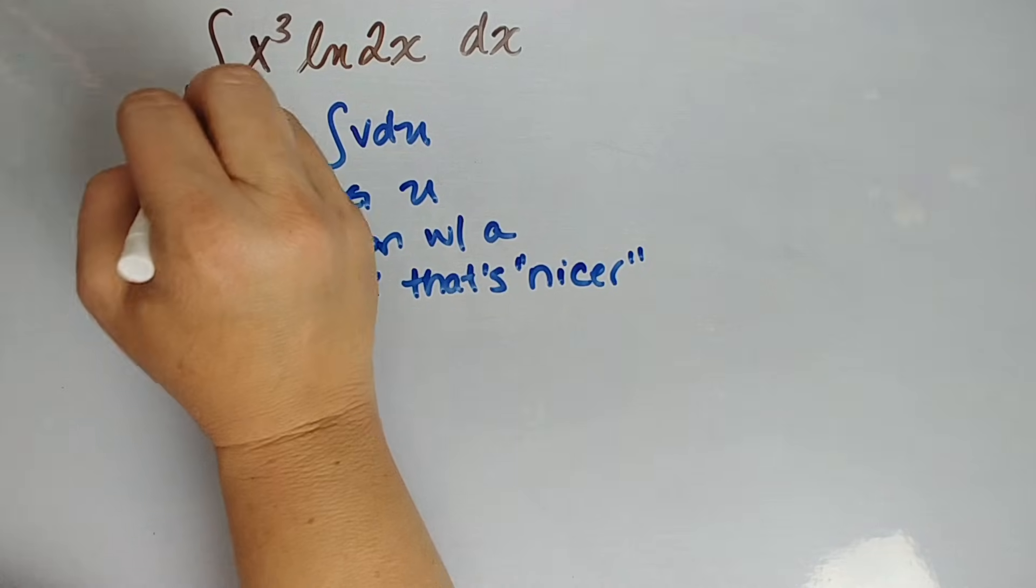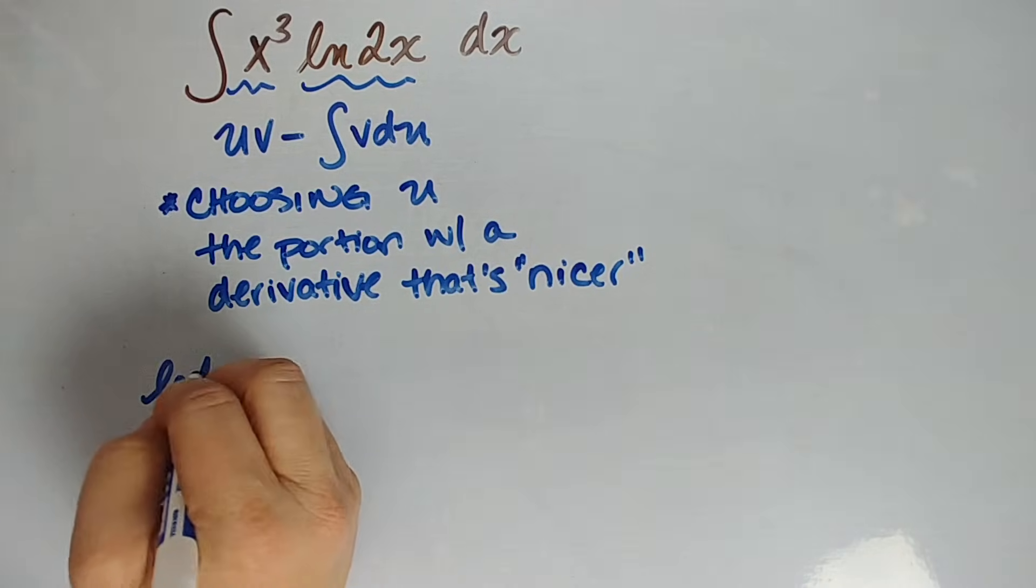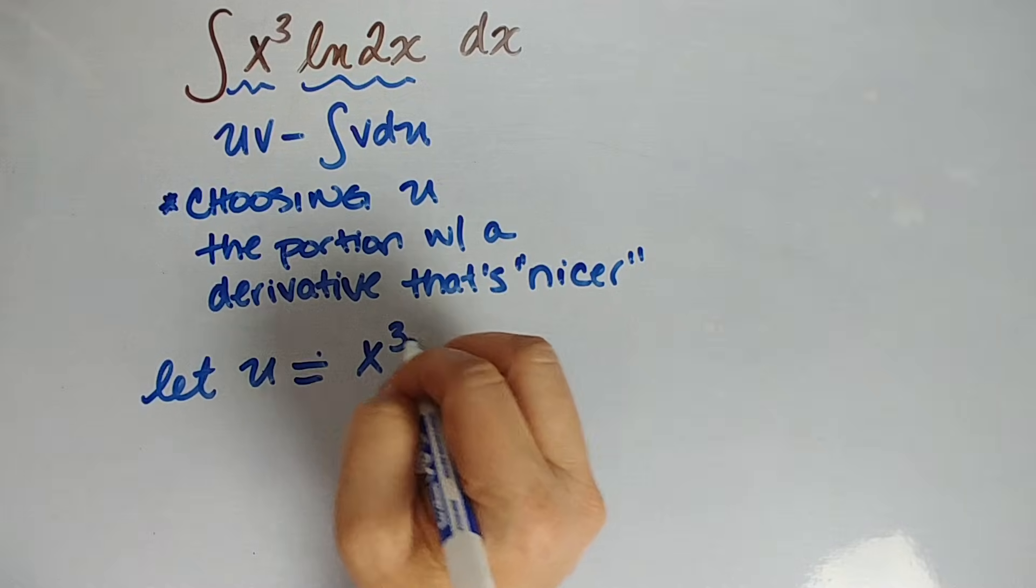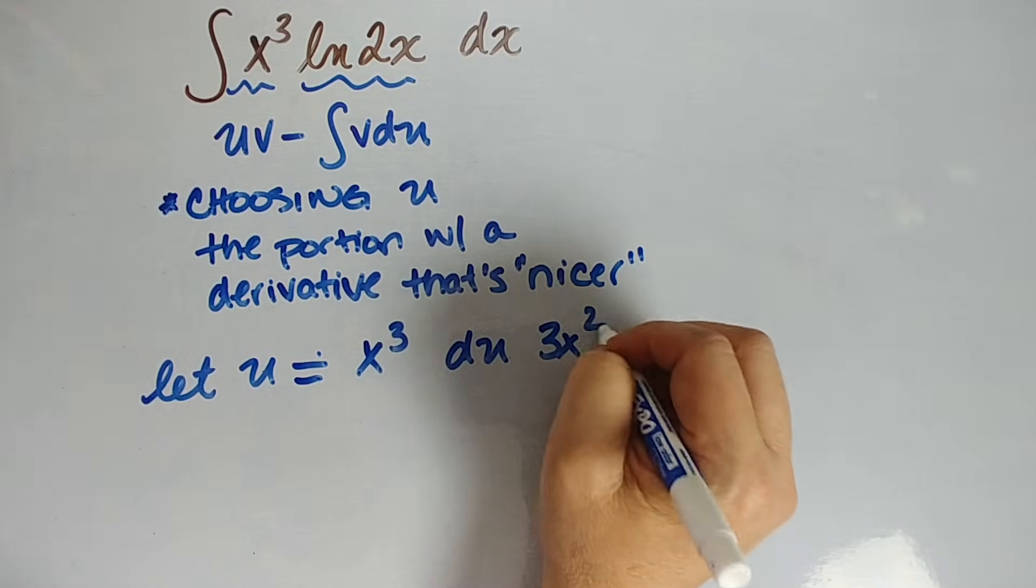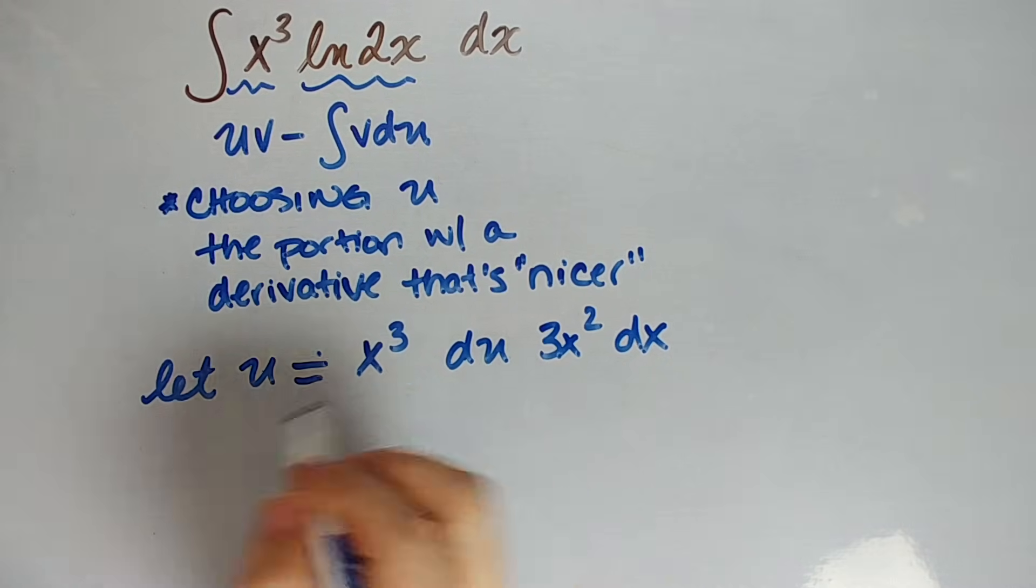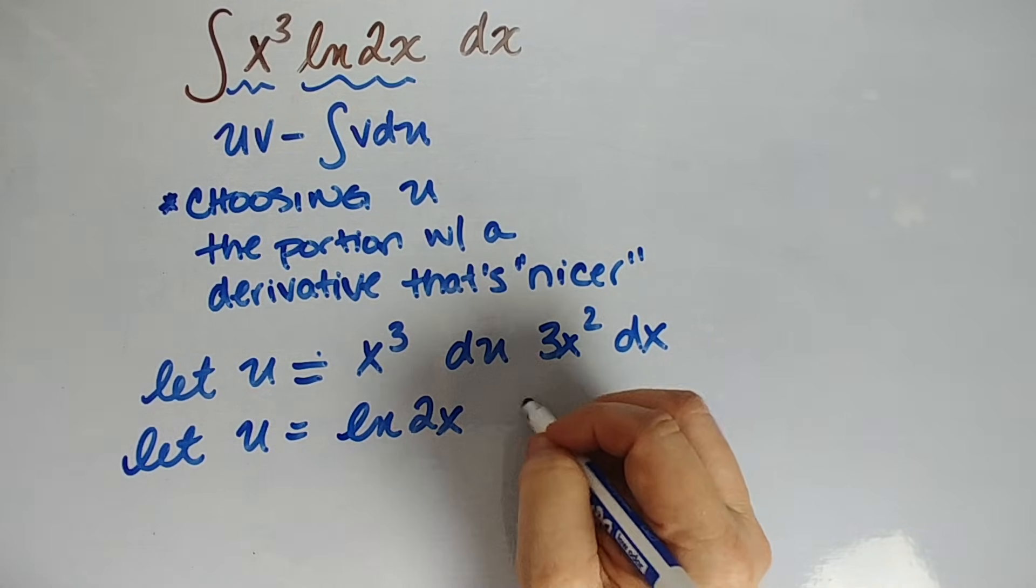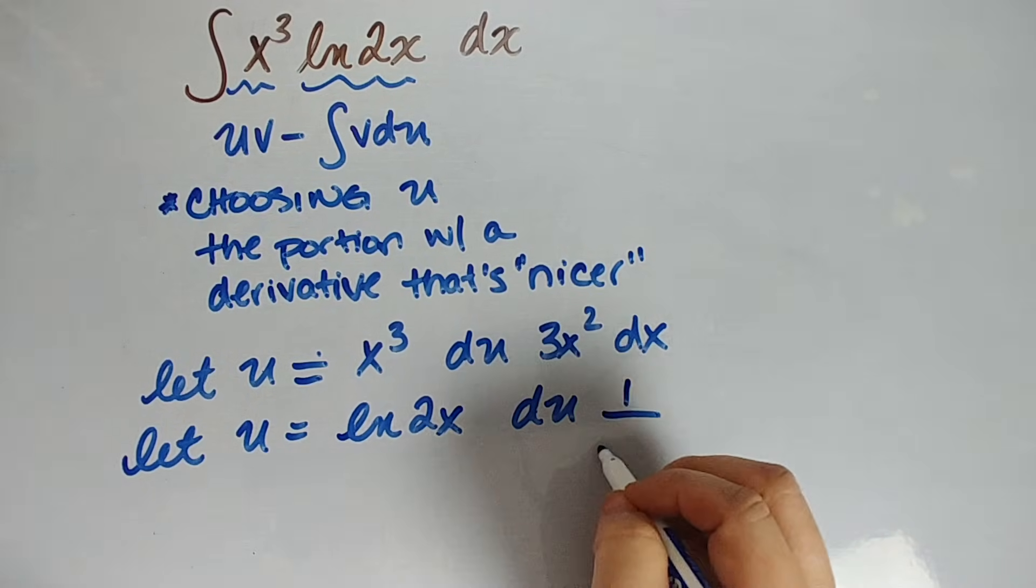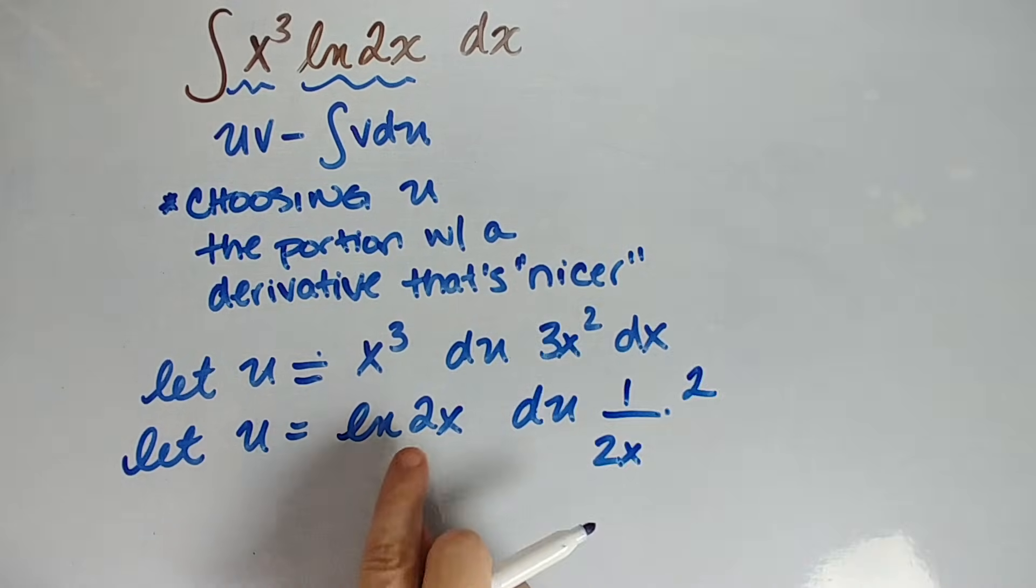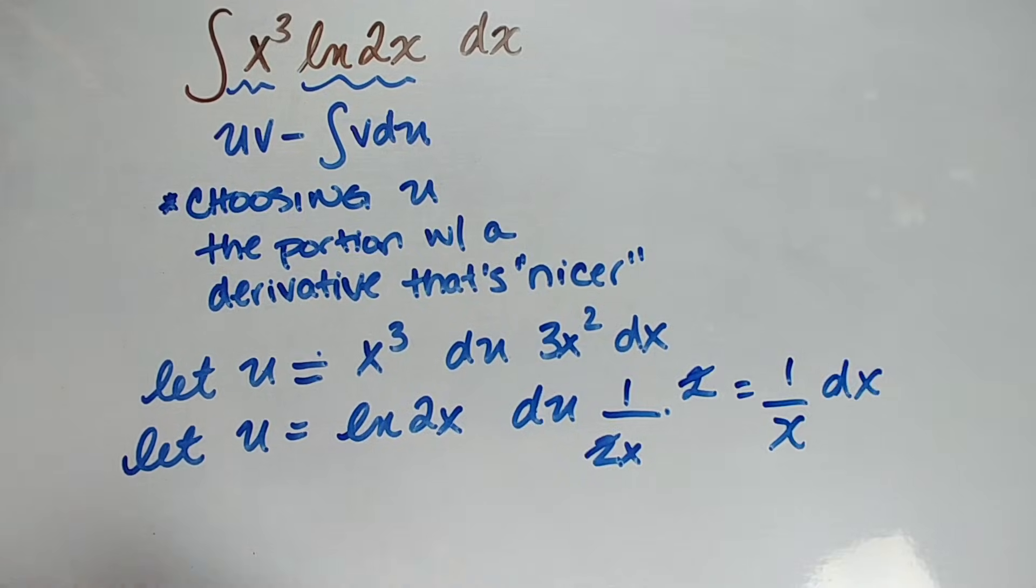So for example, looking at this, we have x cubed and natural log of 2x. Well, if we let u be x cubed, then du is going to be 3x squared dx. 3x squared is not ugly, but it's not any nicer than x cubed. So let's see what happens if we let u instead be the natural log of 2x. Well then du, remember it's going to be a chain rule here. We're going to say 1 over 2x times the derivative of the inside, which is 2. So we just get 1 over x dx. I don't know about you, but 1 over x dx is way nicer and easier to deal with than the natural log of 2x.